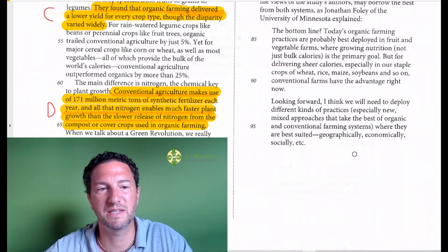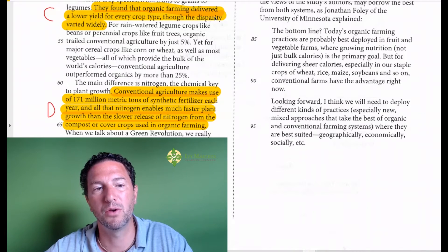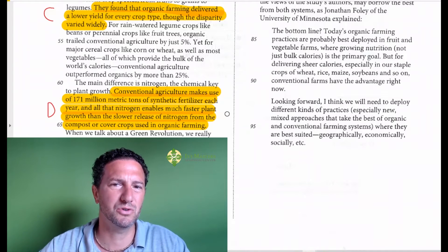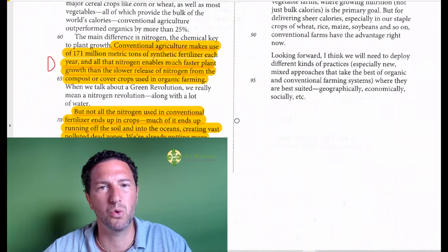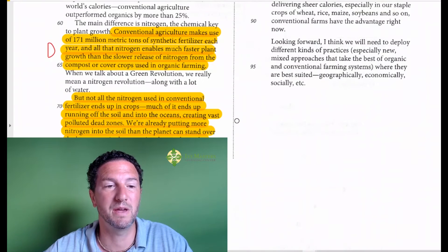Answer choice C: they found that organic farming delivered a lower yield for every crop type, though the disparity varied widely. All of these answer choices seem to legitimately answer the question, we've got to see what best matches.